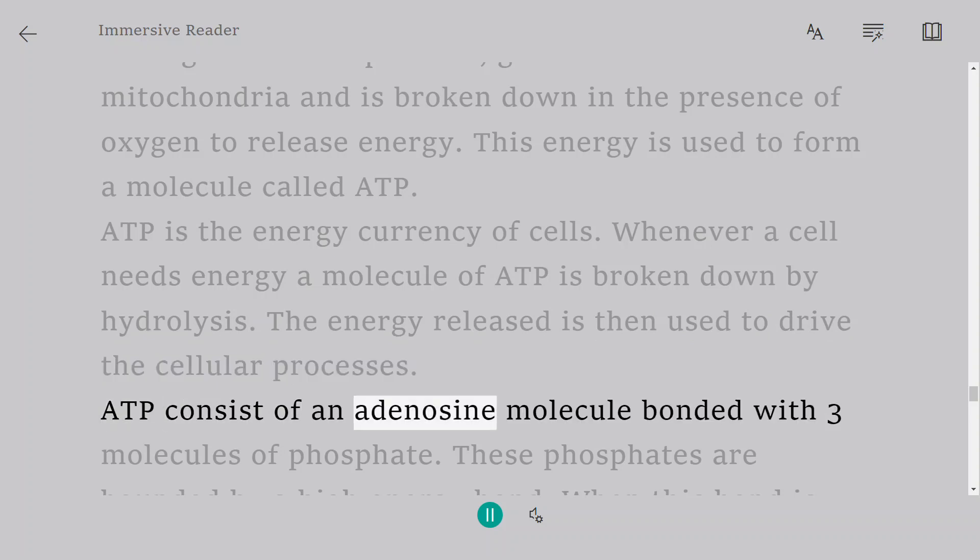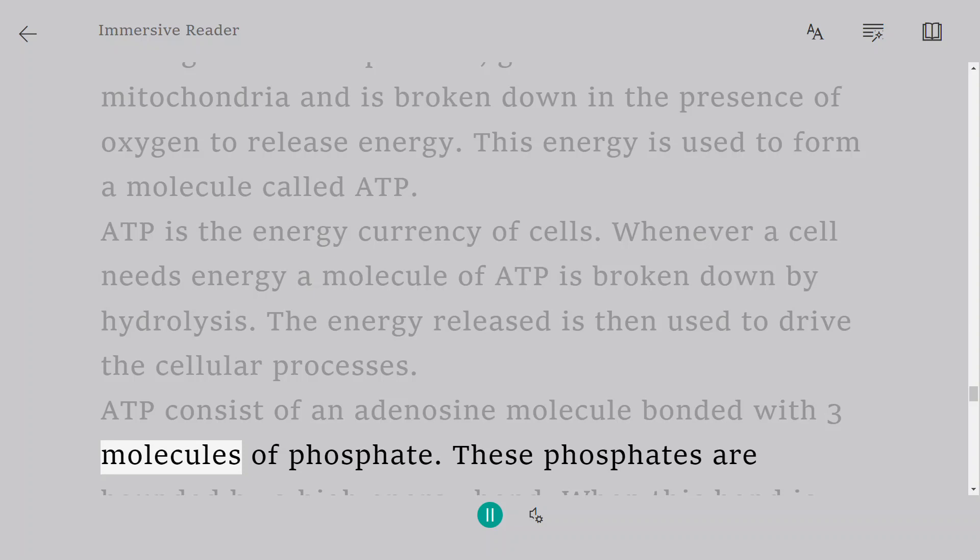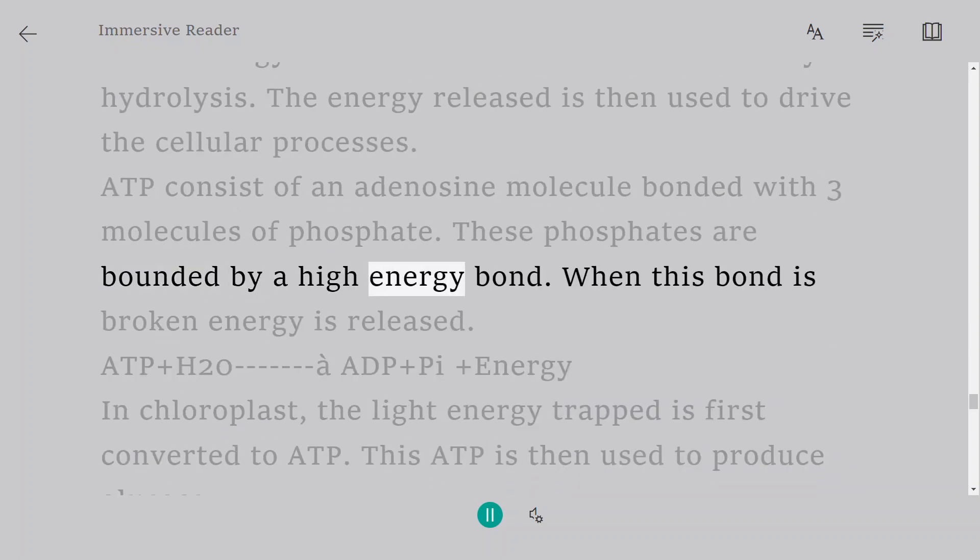ATP consists of an adenosine molecule bonded with three molecules of phosphate. These phosphates are bounded by a high energy bond. When this bond is broken energy is released.